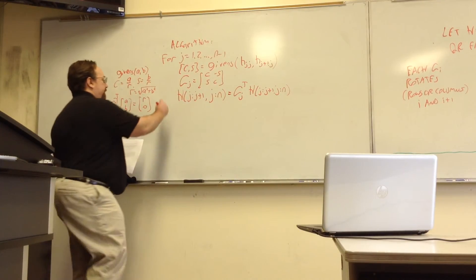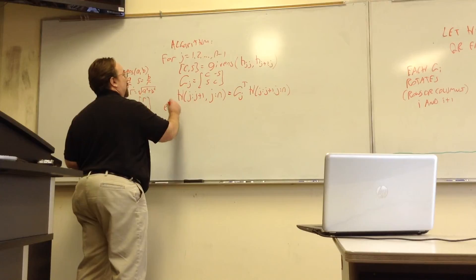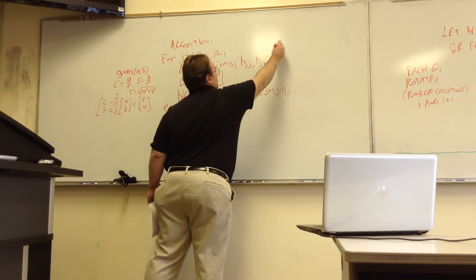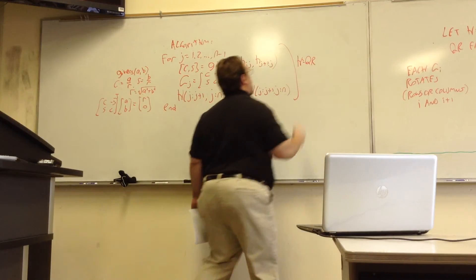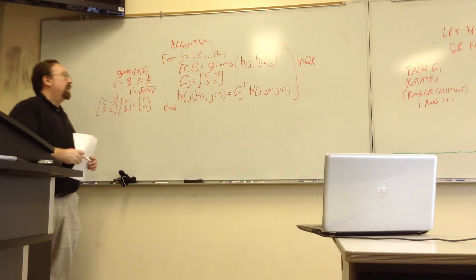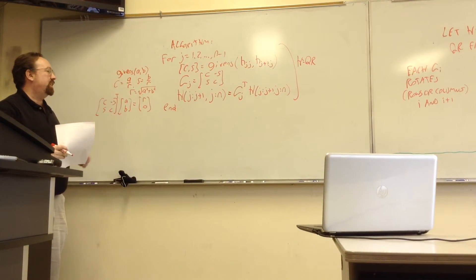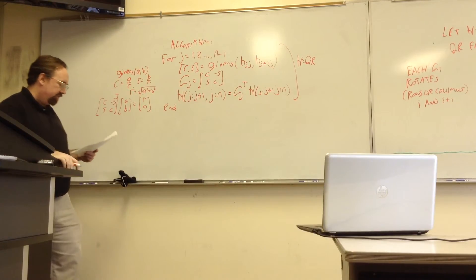So I multiply these rows on the left by the transpose of this Givens rotation. So this loop here does the H is equal to QR part. N minus one rotations, each one takes order N times. Order N squared work.